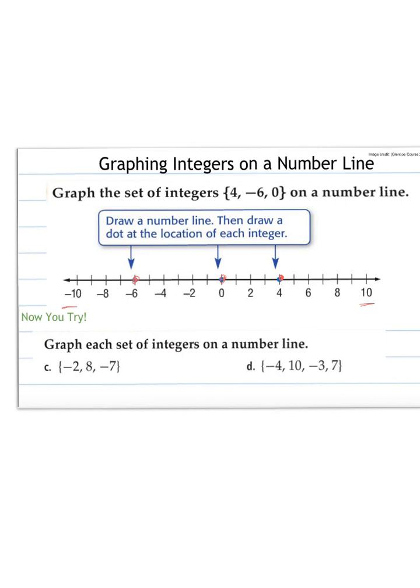Now, next one we're going to try. First, I'm going to draw my number line. You can try these on your own and come back and check. We need to graph negative 2, 8, and negative 7. So I'm going to put my 0.